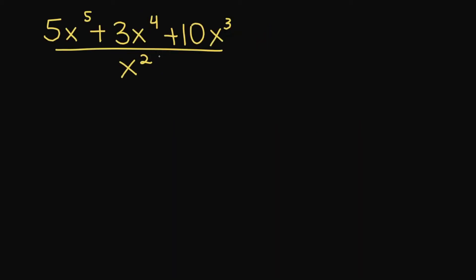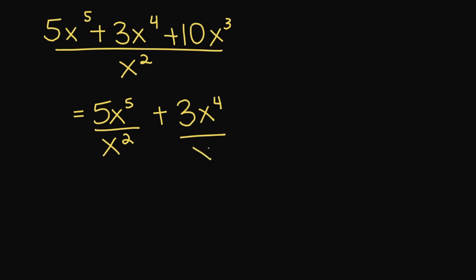Let's look at this example. We are dividing a polynomial by a monomial. So this is going to equal 5x to the fifth power over x squared, plus 3x to the fourth power over x squared, plus 10x cubed over x squared.